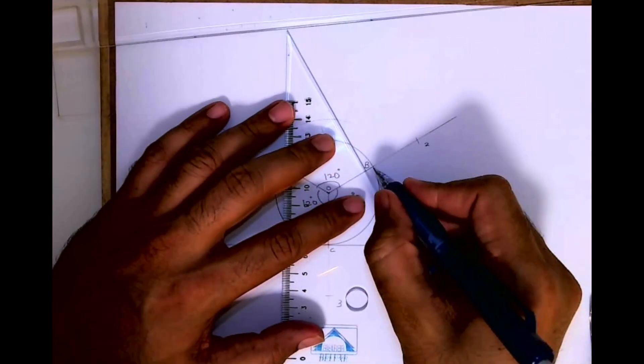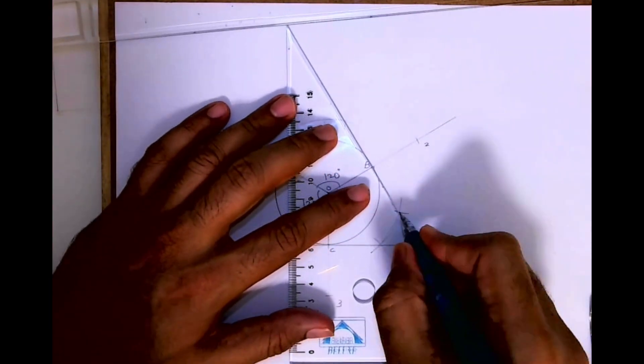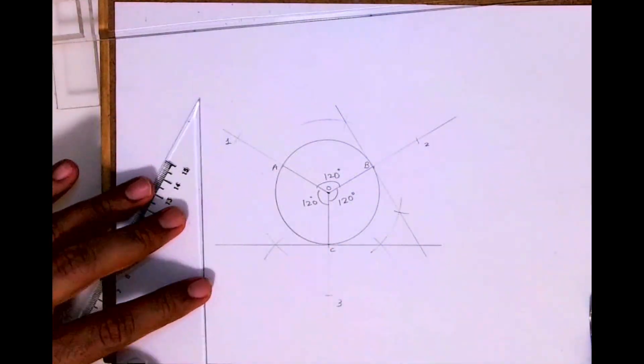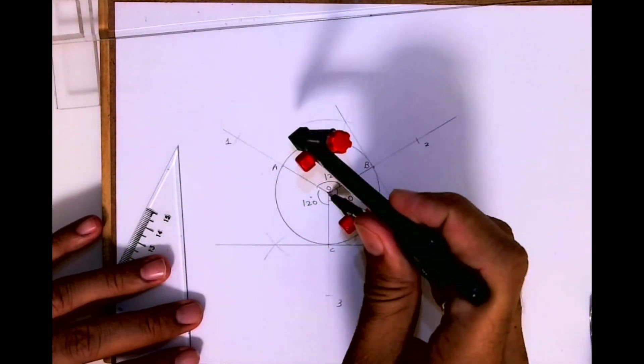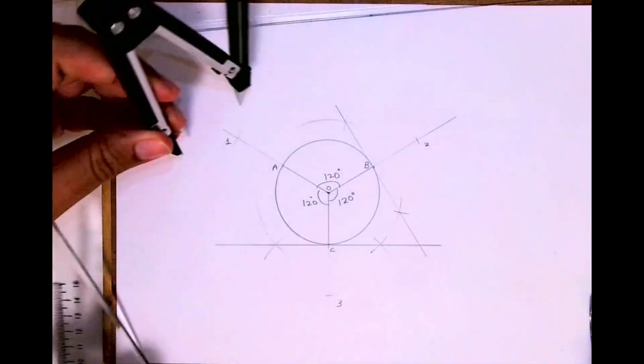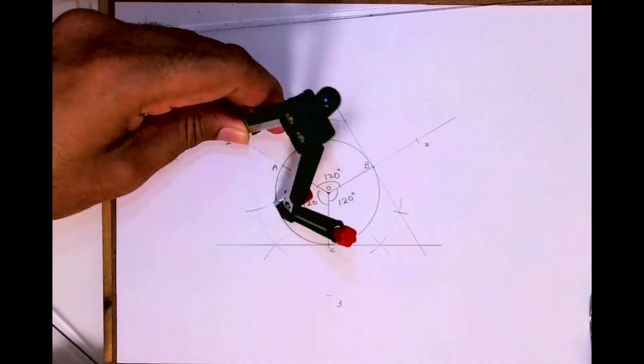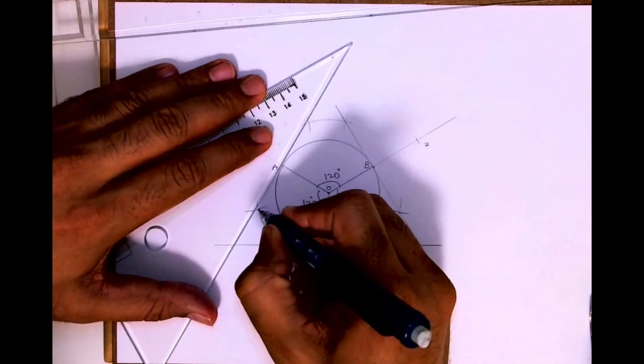And then you draw this line, you'll get tangent. Again you bisect O-1. So this way you divided this line.